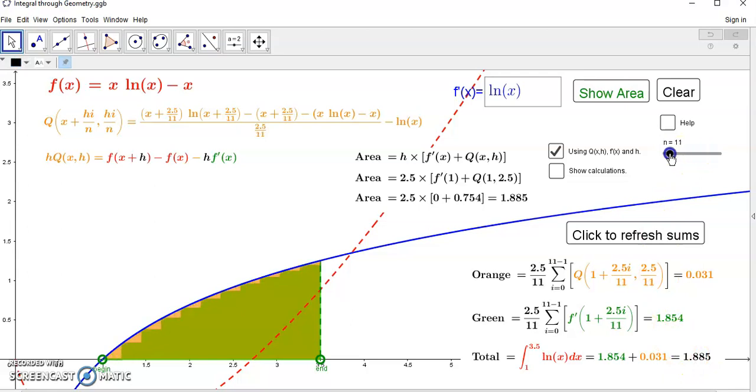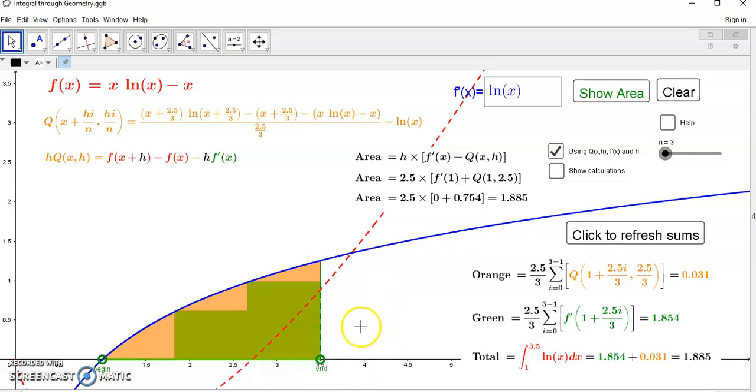But it doesn't matter. Any n will still provide, as you see, this figure doesn't change, will still provide the same value for the total area. So, no limits, no infinity garbage, none of that nonsense. You don't have to spend six months learning how to use limits. Or probably the rest of your life, because most real analysis professors I've met don't actually understand limits or even how to teach them.